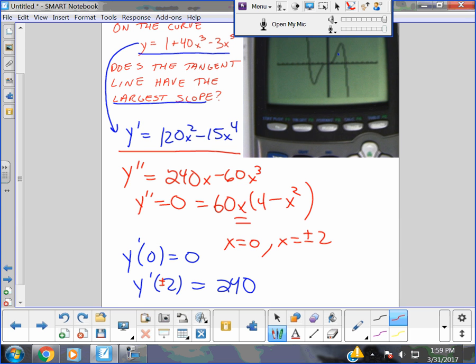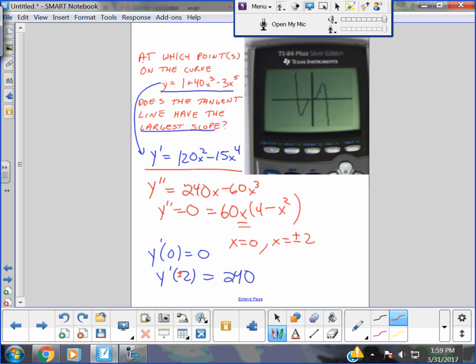So, where? I have to plug it into the first equation if I have a y value. Right, because it didn't ask the x value. It said at which point. So, there are two points. There's two comma blank and negative two comma blank. So, now we have to go all the way back to our original equation. And I can tell right away that these are not the same values because it's an x to the 5th function. And I can use my handy-dandy TI calculator. 1 plus 40 times negative 2 to the 3rd minus 3 times negative 2 to the 5th. And I get negative 223.